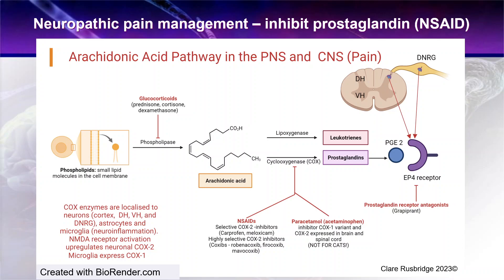Going through these individually, starting at the beginning of the cycle: these molecules all come from phospholipids, which are the small lipid molecules in the cell membrane. These are converted by phospholipase to arachidonic acid, and this step is inhibited by the glucocorticoids.